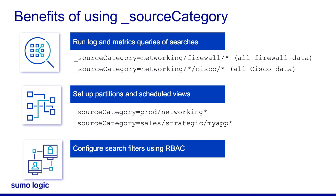Source categories are useful when you set up RBAC. You assign users to roles — for example, analyst or collector manager. The data that a user can view is governed by the search filters associated with the user's roles. You use source categories and other metadata to create a role search filter.